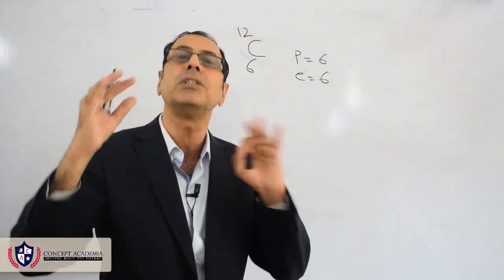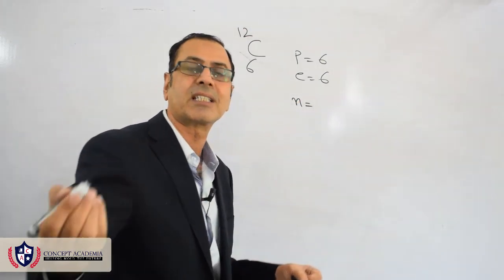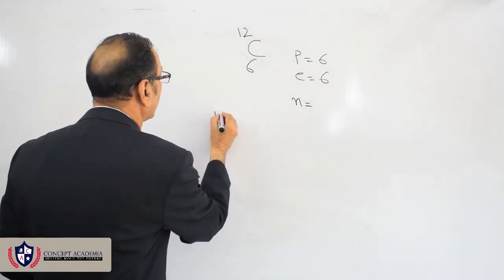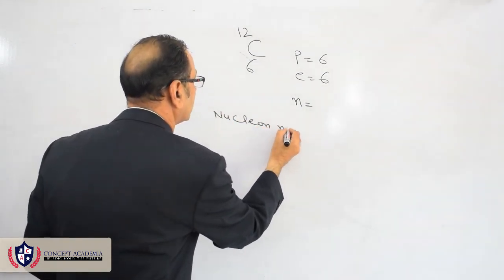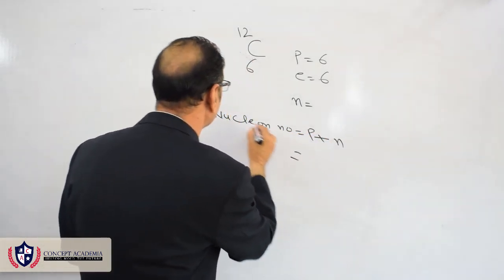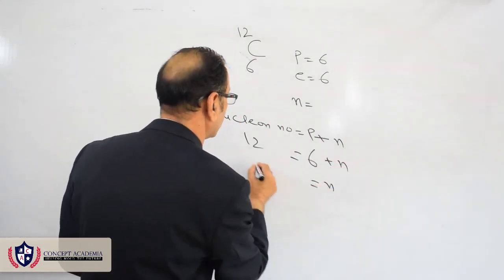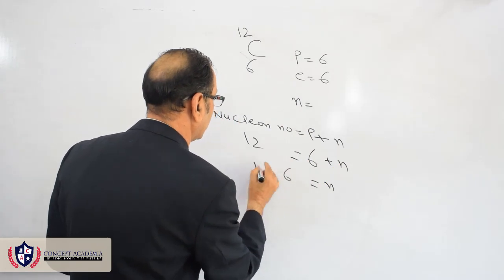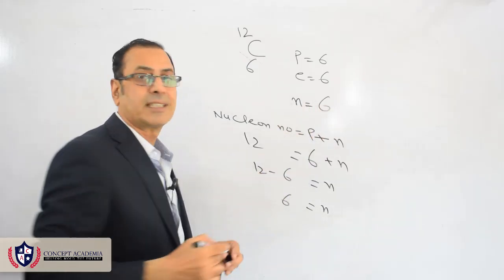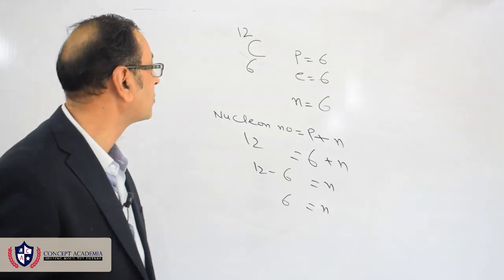The atom as a whole is a neutral particle. To find neutrons, we use: nucleon number = proton number + neutron number. Nucleon number is 12, protons are 6, so neutrons = 12 − 6 = 6. So protons are 6, electrons are 6, and neutrons are 6.